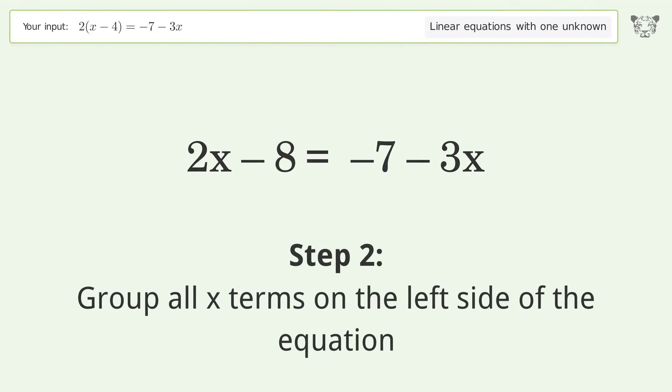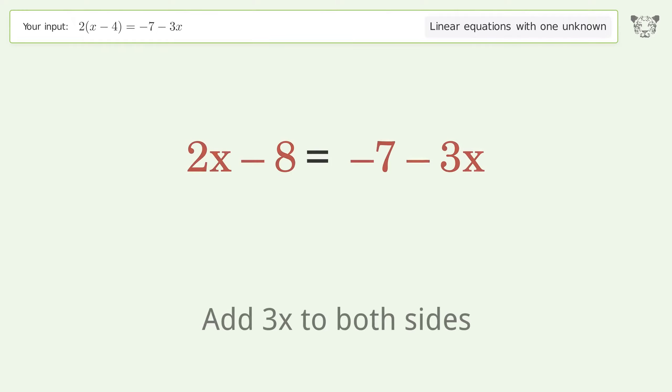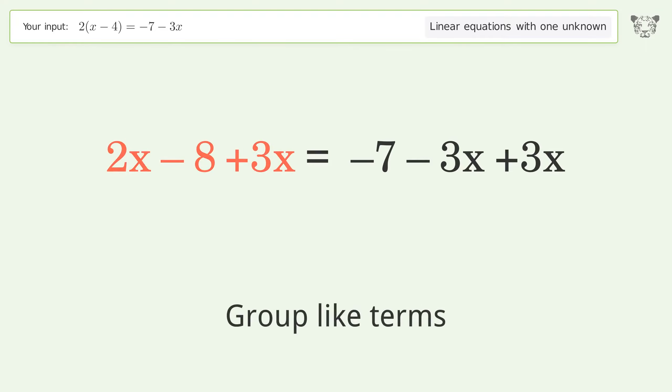Simplify the arithmetic. Group all x terms on the left side of the equation. Add 3x to both sides.